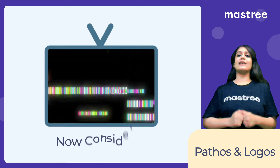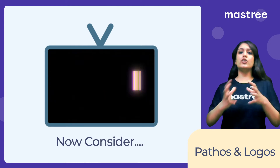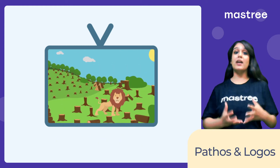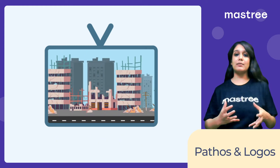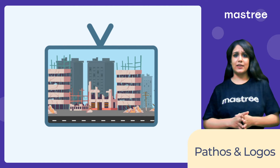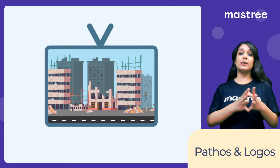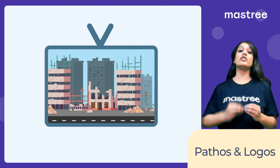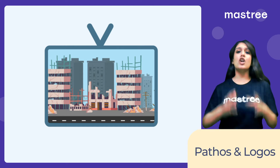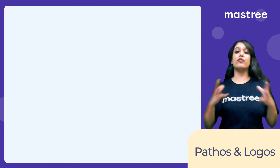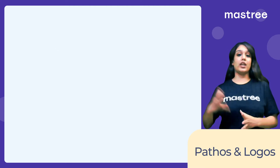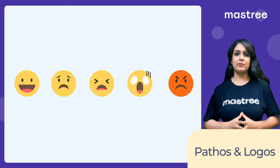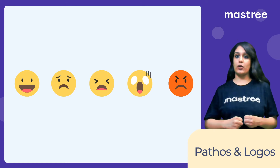If you look at an ad of an NGO, you'll notice that it shows a video of a child in distress, an animal in need of help, a house affected by a natural calamity and stuff like that. You'll also see the NGO helping those in need. This is done in order to evoke an emotional response in the audience. Showing such videos generates various emotions in the viewer — emotions like sadness or happiness, or maybe even pain and anger. Creating these emotions is extremely important.